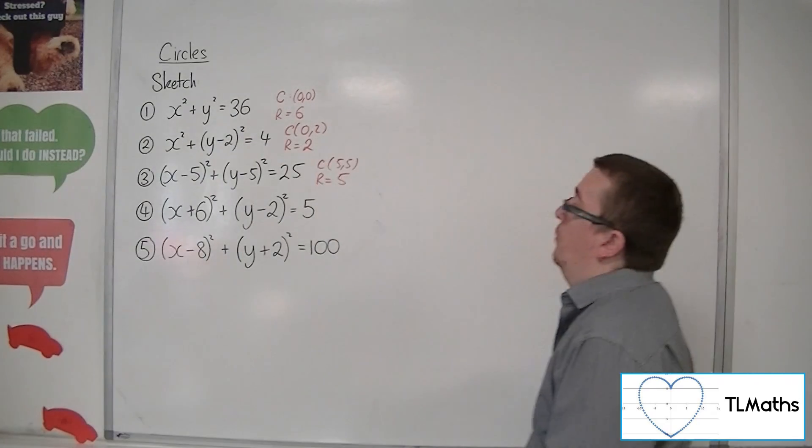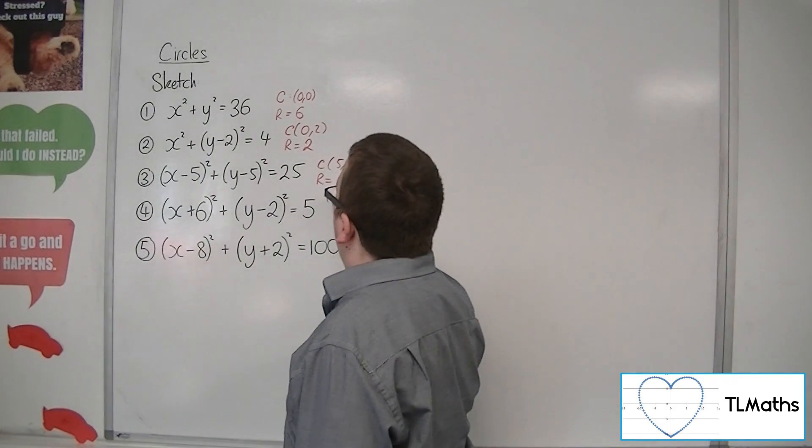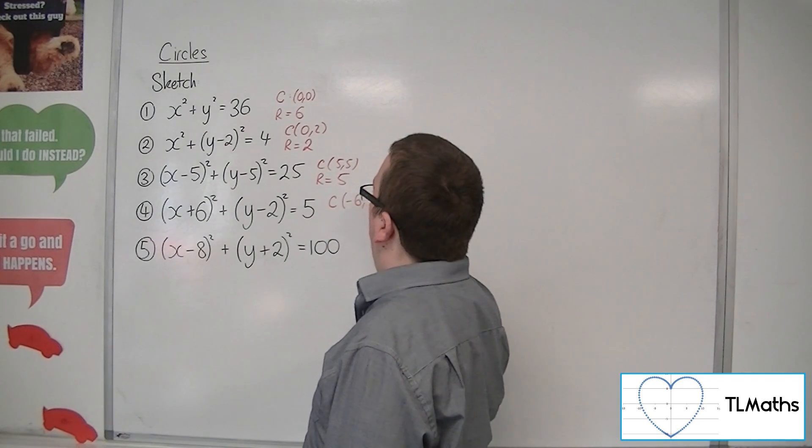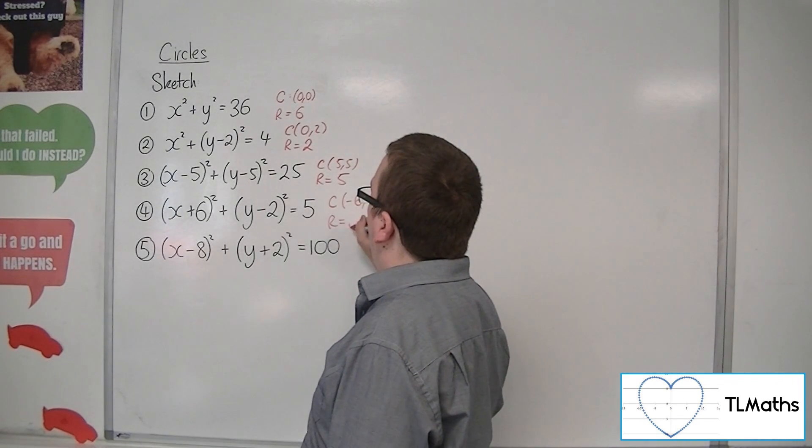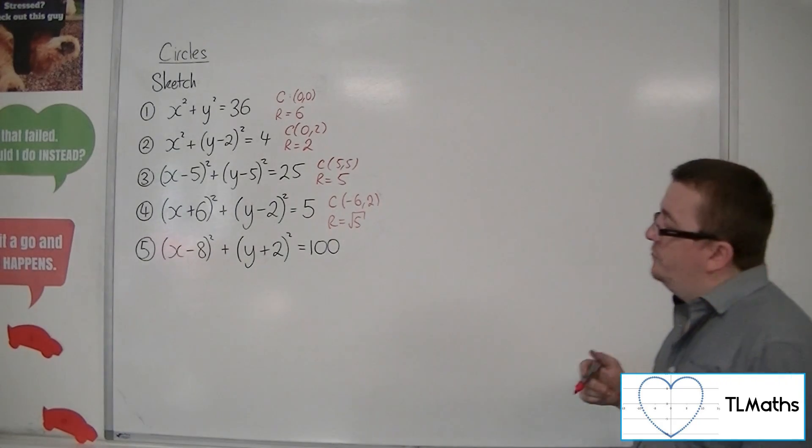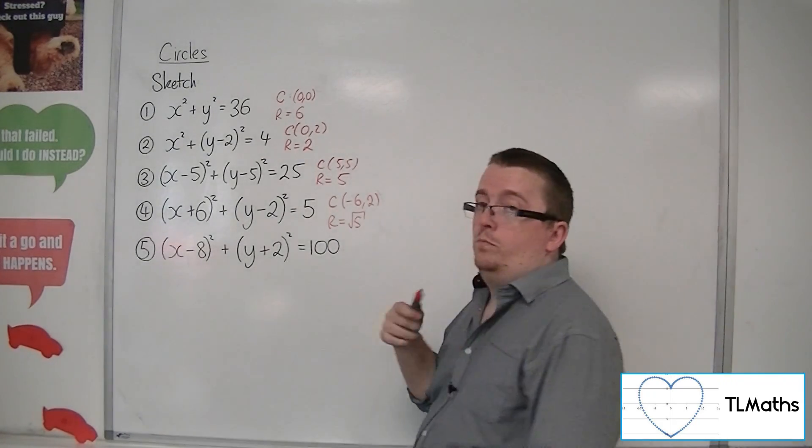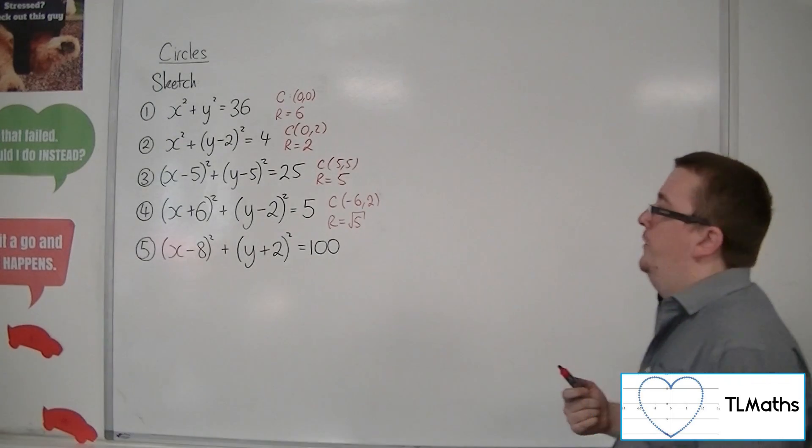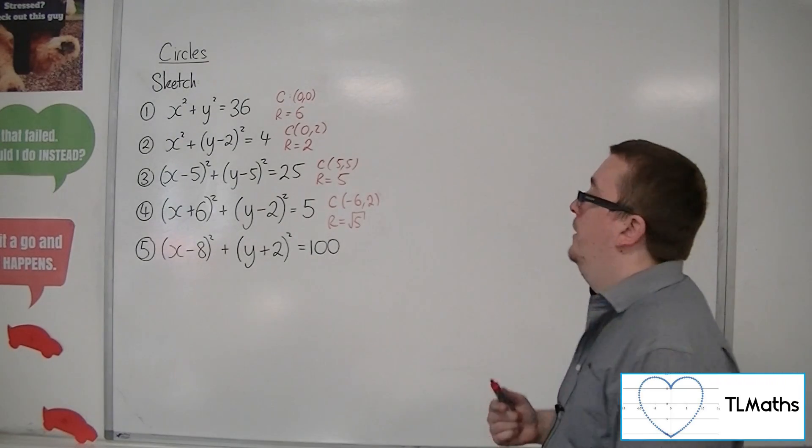Now, number 4, this is a circle that will have centre at minus 6, 2, and a radius of root 5. Now, root 5 is 2 point something. So be aware of what that's going to then look like.